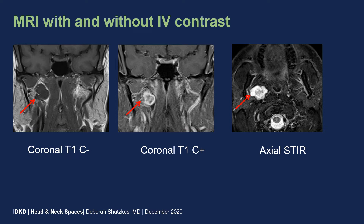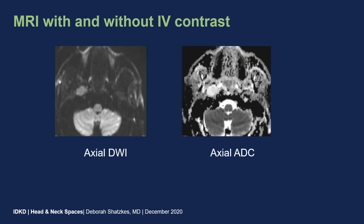The T2 signal intensity is pretty much identical to CSF surrounding the upper spinal cord. On the axial DWI image and the ADC image, we can see that the lesion does not show much diffusion restriction — it's very similar to the cerebellar hemispheres seen more posteriorly. But on the ADC map, it is very bright, kind of light bulb bright, so much brighter than the cerebellar hemispheres that it almost looks like CSF.